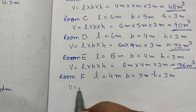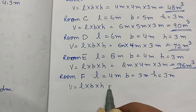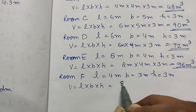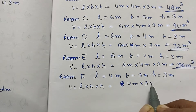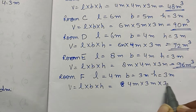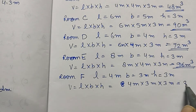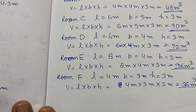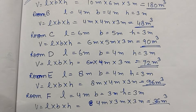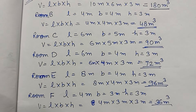Room F: volume is L into B into H — 4 meter into 3 meter into 3 meter, which gives 9 times 4 equals 36 meter cube. So we have now found the volume for all six rooms.